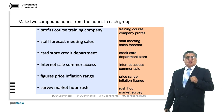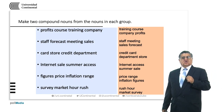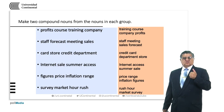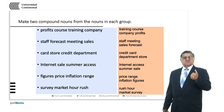'Card store credit department' — we have a department about storing credit cards. 'Internet sales summer access' — it is the access for an internet summer sale.